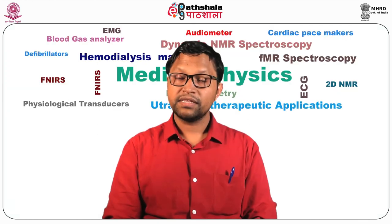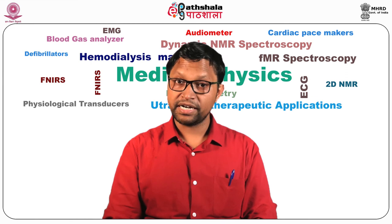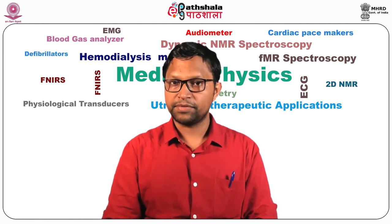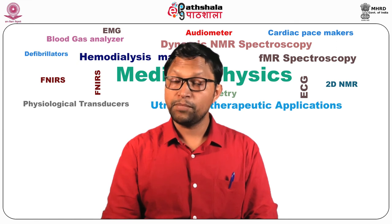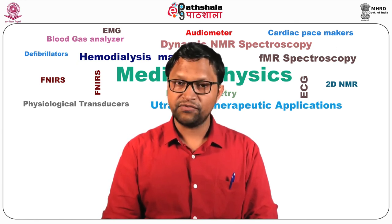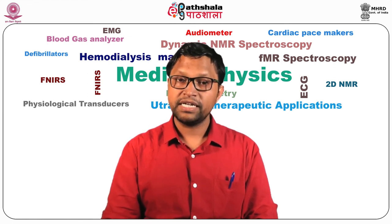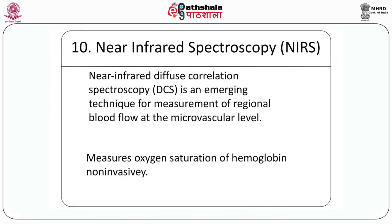Near-infrared spectroscopy uses infrared light, which is capable of penetrating the skin and the skull. It can reach significant depth, allowing it to be absorbed by oxyhemoglobin, and the returning light gets altered because of this. Therefore, the returning light quantifies the amount of oxyhemoglobin. Near-infrared diffuse correlation spectroscopy is an emerging technique for measurement of regional blood flow at the microvascular level. These measurements are useful to monitor the dynamic effects of exercise, drug treatments, environmental, or physical manipulations on targeted micro-sized vascular areas.